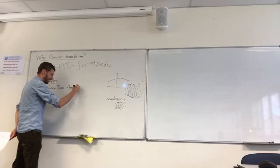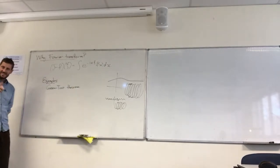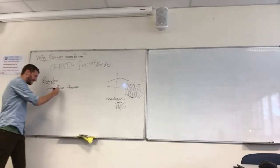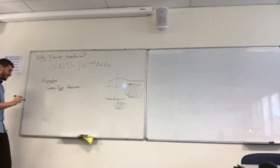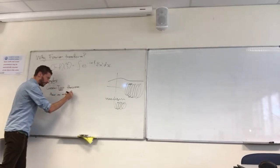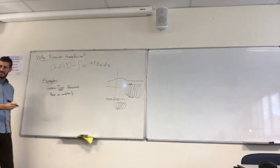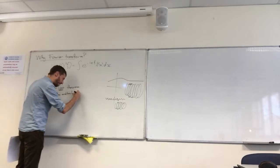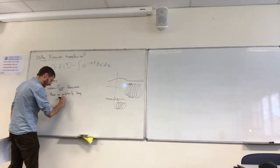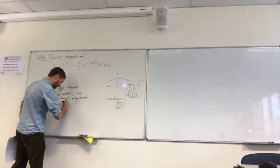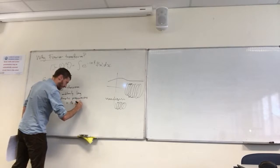Have any of you heard of this one? It's something to do with number theory — yes, I saw a nod. The theorem says — infinitely many primes or something. Euclid told us there are infinitely many primes. What Green and Tao proved is that there are arbitrarily long arithmetic progressions in the primes.